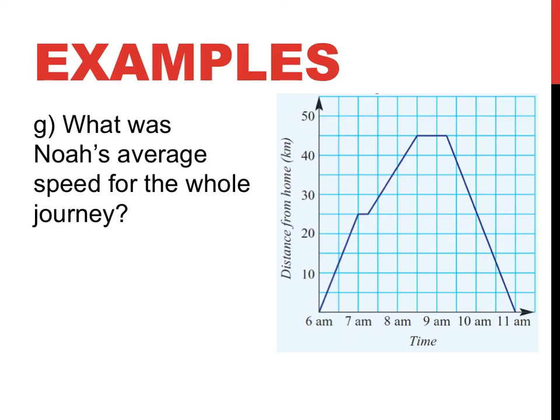What was Noah's average speed for the whole journey? So how far did he travel the whole time? He traveled up 45. Speed equals distance over time. He traveled up for 45, he traveled back down for 45, so that's 90 is the total distance.